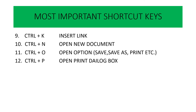Ctrl P — Ctrl P is used to open the print dialog box. Print dialog box open करने के लिए Ctrl P का use करते हैं. उसके अंदर जाकर print की settings change कर सकते हैं, जैसे कितनी prints निकालनी हैं और कितना margin रखना है, वो भी set कर सकते हैं.